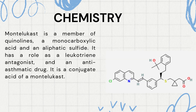Chemistry: Montelukast is a member of quinolines, a monocarboxylic acid and an aliphatic sulfide. It has a role as a leukotriene antagonist and an anti-asthmatic drug. It is a conjugate acid of a Montelukast.